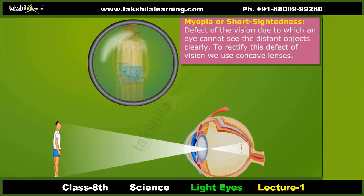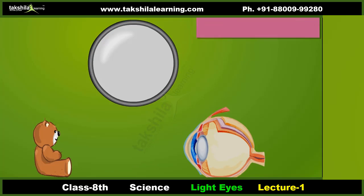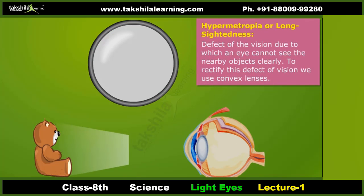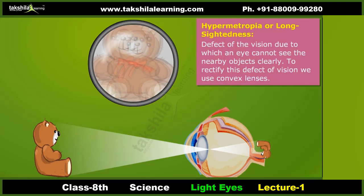Myopia, or short-sightedness, is a defect of vision due to which an eye cannot see distant objects clearly. To rectify this defect, we use concave lenses. Hypermetropia, or long-sightedness, is a defect due to which an eye cannot see nearby objects clearly. To rectify this defect, we use convex lenses.